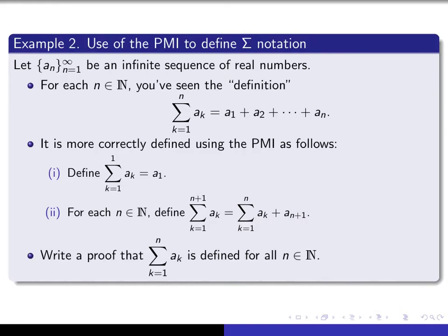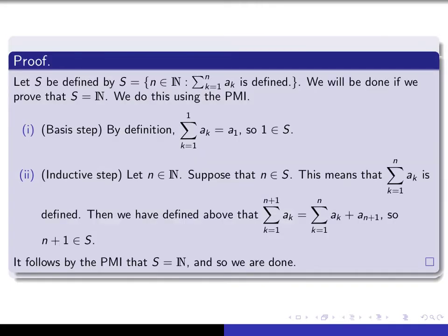What we'll do next is write a proof that the summation of a_k, k from 1 to n, is defined for every natural number n by these two properties. We let S be the set of all natural numbers such that the sum of a_k as k runs from 1 to n is defined. We'll be done if we prove that S equals all of the natural numbers, using the principle of mathematical induction. The basis step says that the summation of a_k as k runs from 1 to 1 is a_1 — this was our definition — and that proves 1 is an element of S.